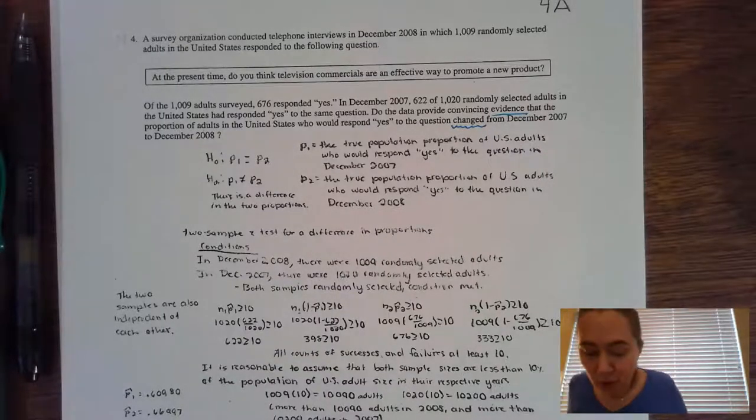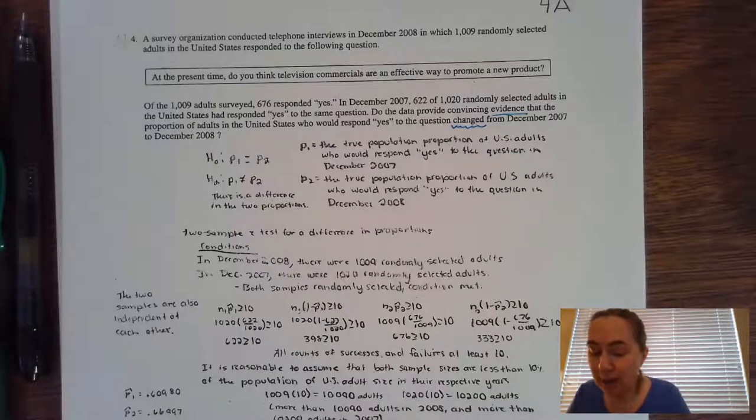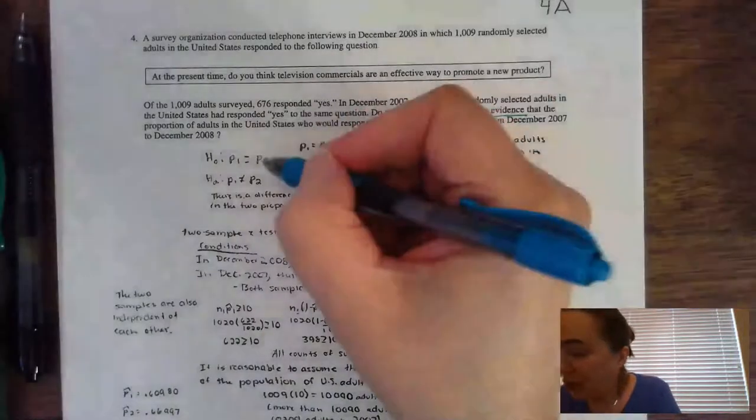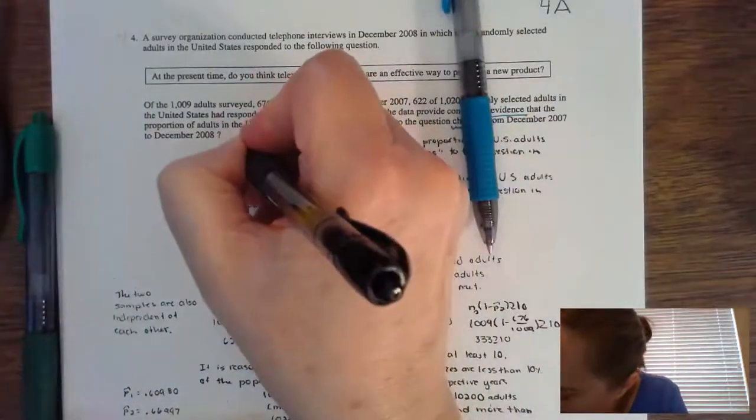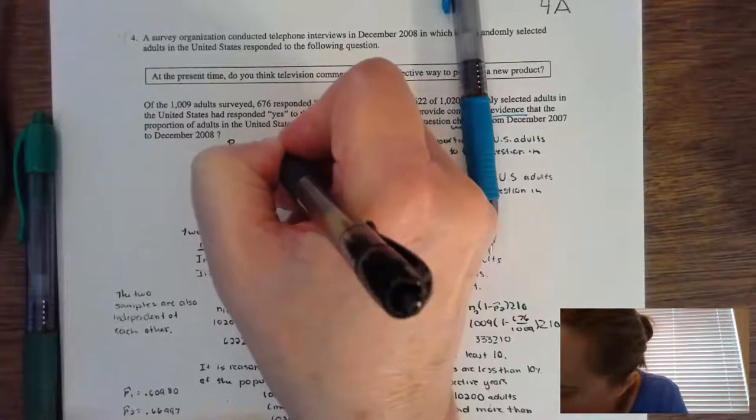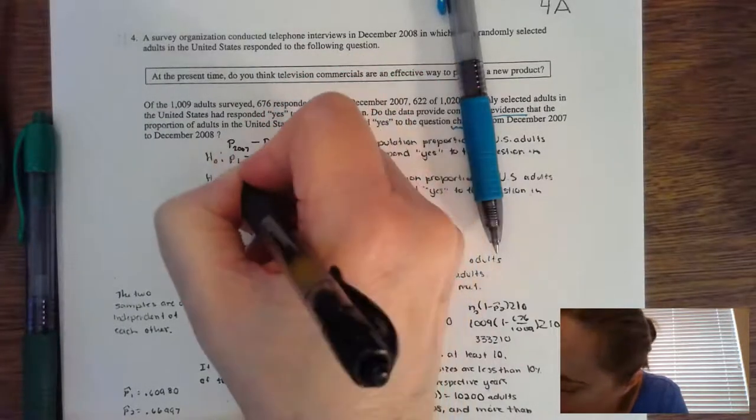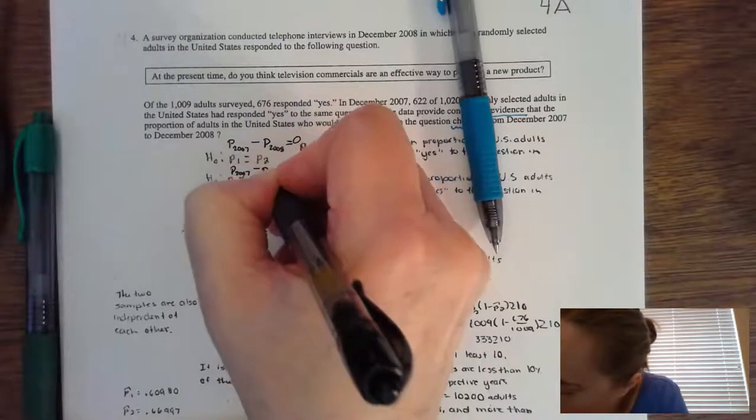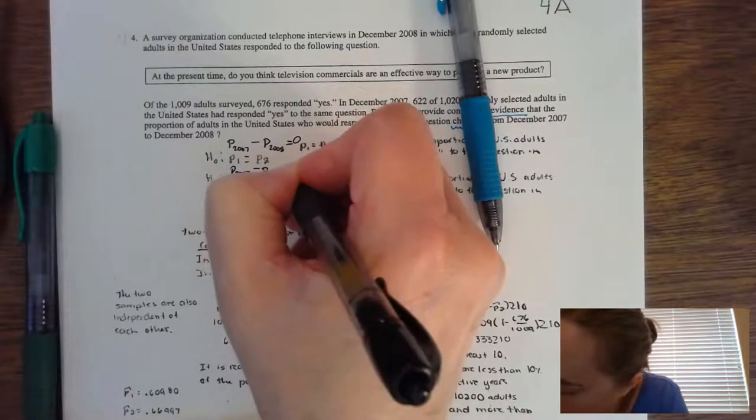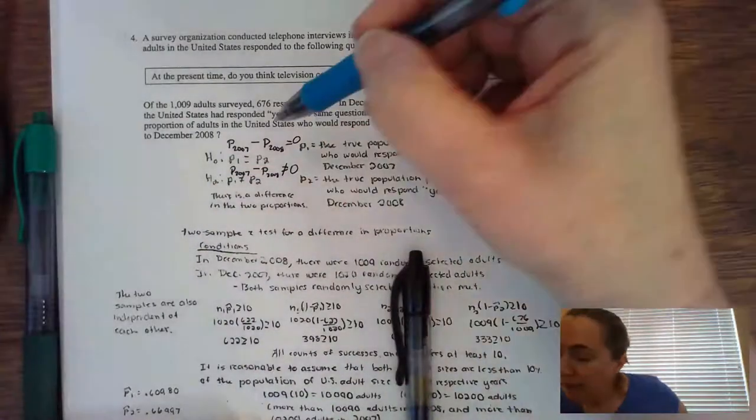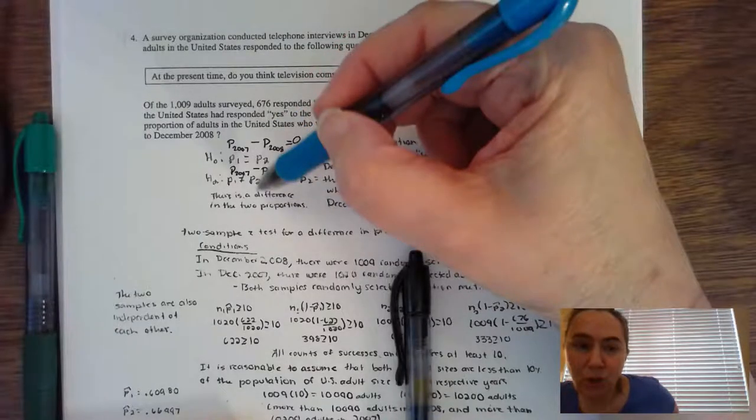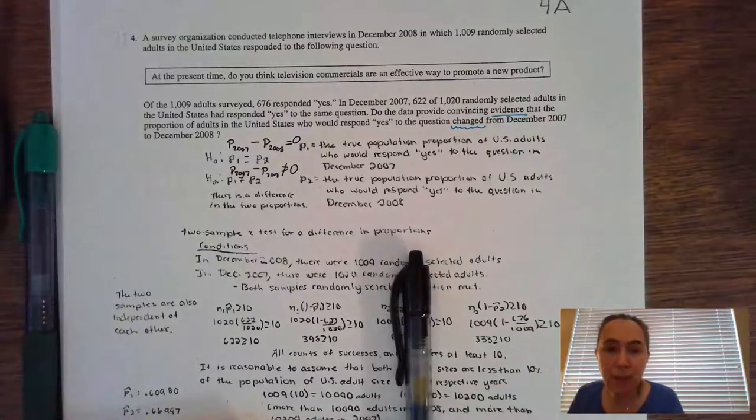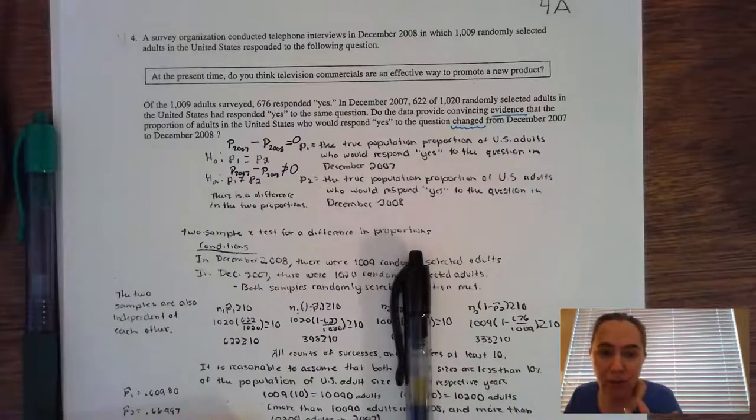Now, the first check marks that we're going to take a look at are going to be based on the hypothesis part. Now this student here learned how to do the hypothesis a little bit differently. What I would be looking for is P2007 minus P2008 equals zero, and P2007 minus P2008 is not equal to zero. Now, if you move those numbers over on the other side, you can see that this student had the right concept going on. But unfortunately, this student is not going to get credit because you're not allowed to use the subscripts one and two in your solutions.